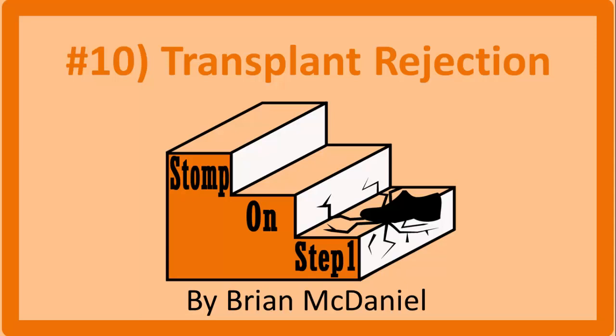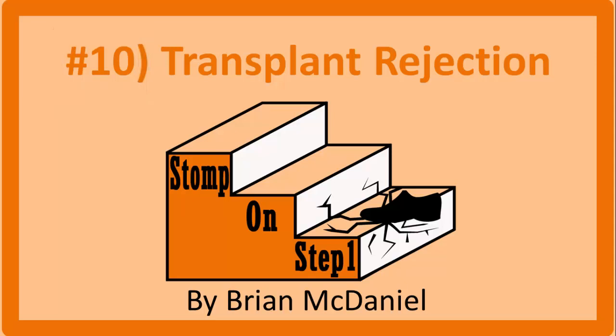Distinguished future physicians, welcome to Stomp on Step 1, the only free video series that helps you study more efficiently by focusing on the highest yield material. This is the tenth and final video in the playlist covering inflammation and immunology. This is going to cover the different types of organ transplant rejection, including hyperacute, acute, chronic, and graft versus host.